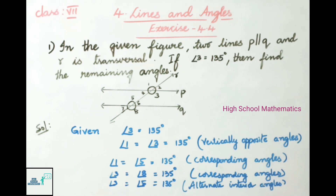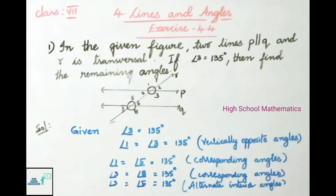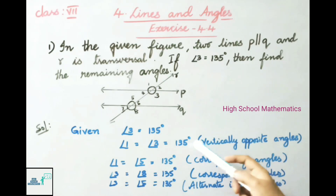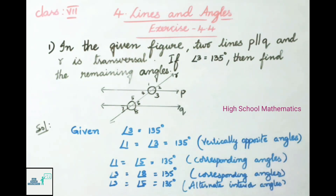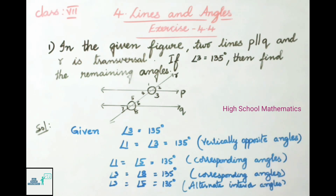Let us see the solution. Given angle 3 is equal to 135 degrees. Angle 1 is equal to angle 3, that equals 135 degrees, because angles 1 and 3 are vertically opposite angles. Angle 1 and angle 5 are equal because both are corresponding angles. Therefore angle 1 equals angle 5 equals 135 degrees.